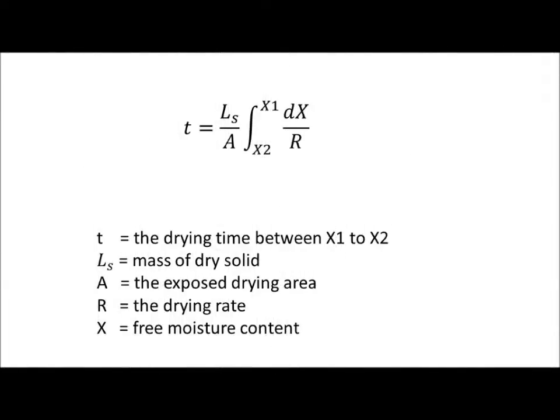However, the time, t, for drying between x1 and x2 in falling rate period can be calculated using the similar formula for constant rate drying, as shown here. Ls refers to mass of dry solid, A is the exposed drying area, R is the drying rate, while x refers to free moisture content. Calculations are slightly different for falling rate drying.